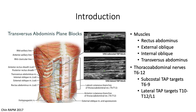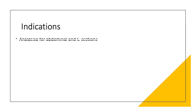The upper abdomen is innervated by nerves coming from the costal margin or the edge of the lower ribs. These nerves can be targeted by the subcostal TAP to cover the incisional pain of the upper abdomen from T6 to T9. The lower abdomen below the umbilicus is covered by the lateral TAP block, which covers T10 to T12 or L1.